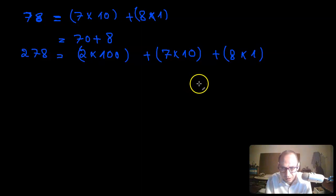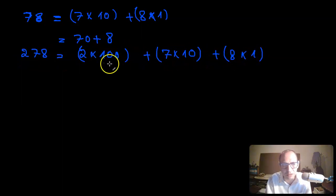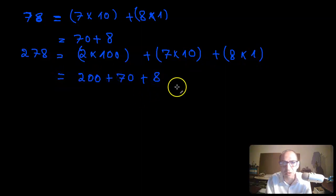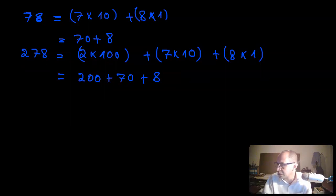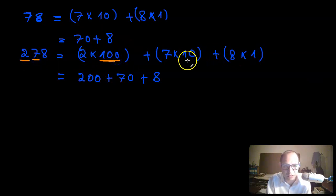So in the number 278, you can write it as 2 times 100, 7 times 10, and 8 times 1, which is the same as 200 plus 70 plus 8. In this number, the digit 2 is at the hundreds place value, the digit 7 is at the tens place value, and the digit 8 is at the ones place value.